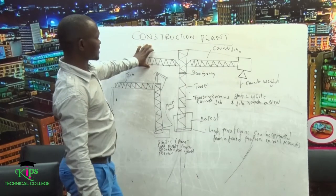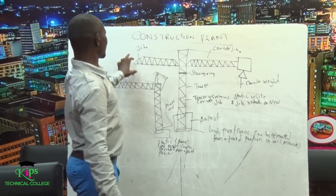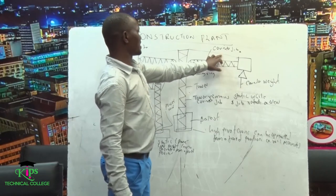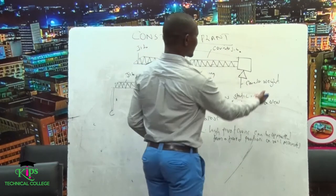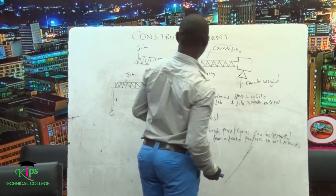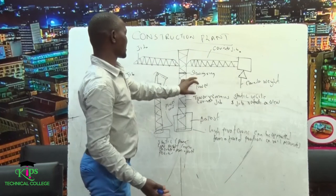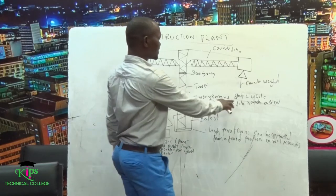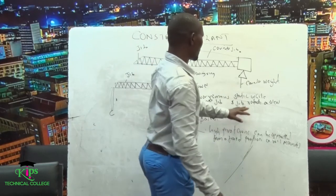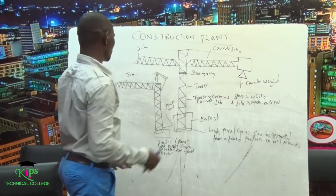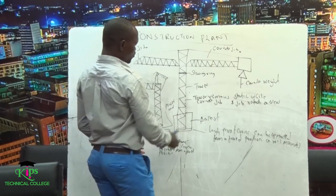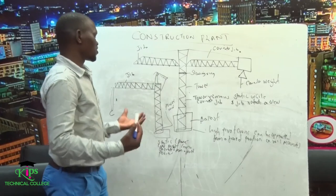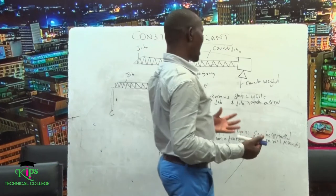This is a static crane. It has a jib, a counter jib, and a counter weight. Then we have the slewing ring, and then the tower. The tower remains static while the counter jib will rotate or slew. We also indicate the ballast — the function of the ballast is to provide enough weight and a stable base so the crane cannot move when transporting materials.